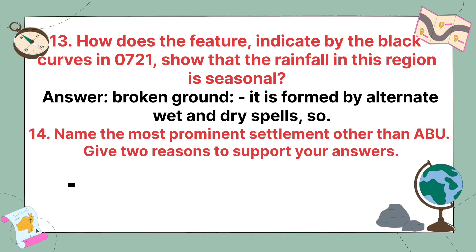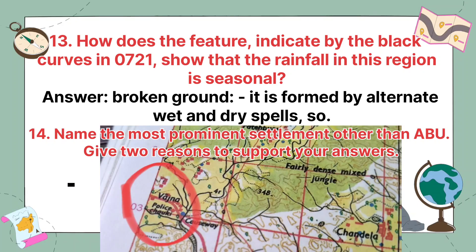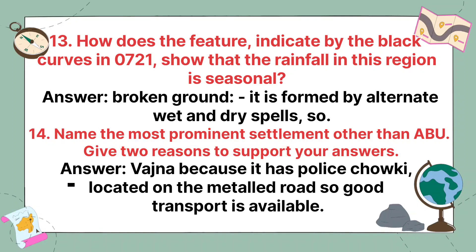Name the most prominent settlement other than Abu. Give two reasons to support your answer. The most prominent settlement other than Abu is Vazna, because it has a police chawki located on the metal road, and good transport facilities are also available.